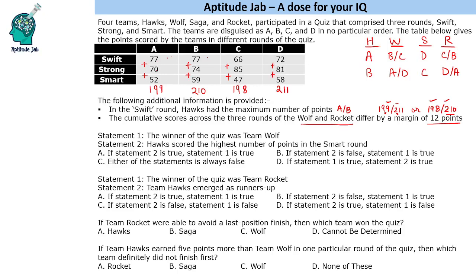We have to answer questions based on this — all questions are condition-based. The first question gives two statements: Statement 1 says the winner of the team quiz was Team Wolf, and Statement 2 says Hawks scored the highest number of points in the Smart round. Two of the options start with Statement 2, so let us take Statement 2 first.